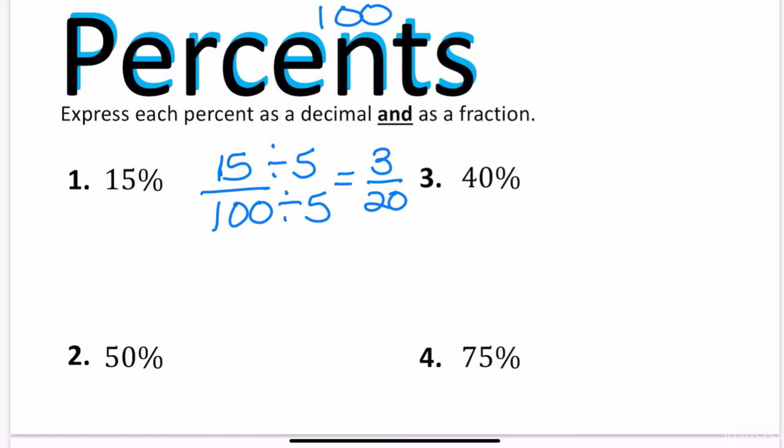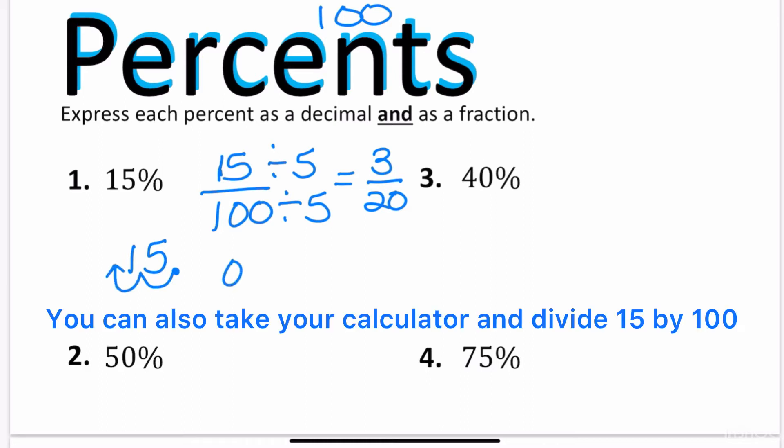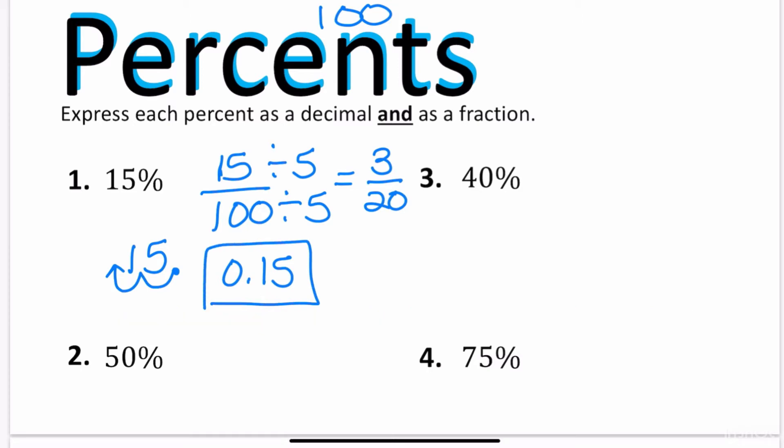Now let's go ahead and write it as a decimal. 15 divided by 100 basically means that I will take the decimal point, which is after the 5, and you move it back two spaces. So 0.15 is the same as 15%. So 15% is 0.15 and 3 over 20.